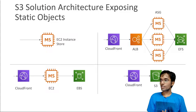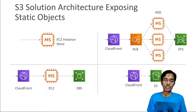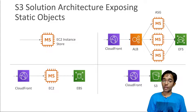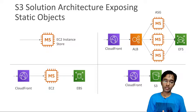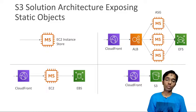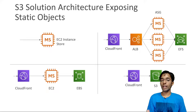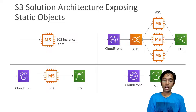Let's get into some solution architecture around Amazon S3. A common question is how do you expose static objects to your clients. A simple option would be to have an EC2 instance that's publicly accessible, maybe with an EBS volume or instance store where the data is stored. It's cheap, it works, but it doesn't scale very well and it's not highly available.